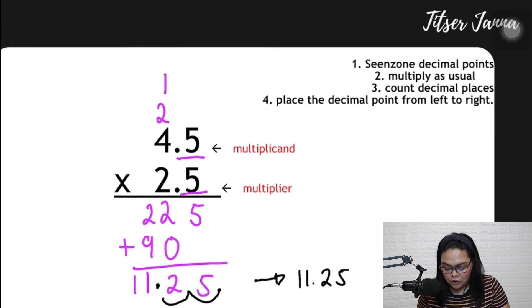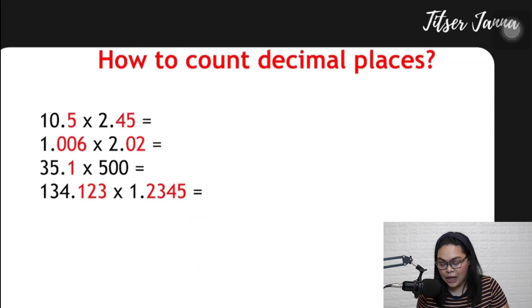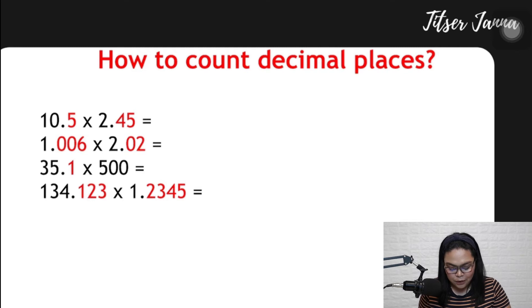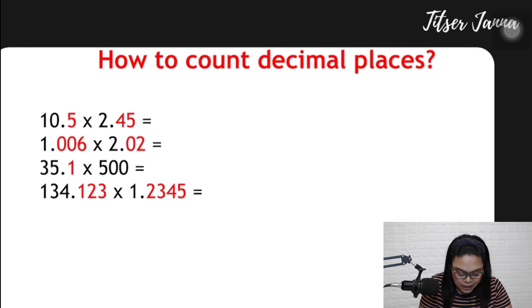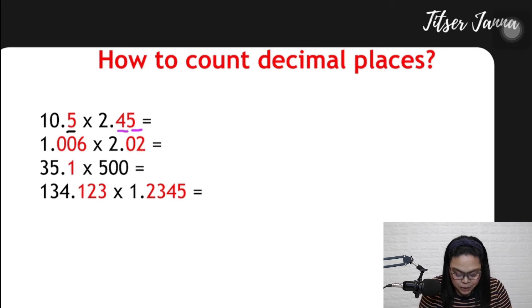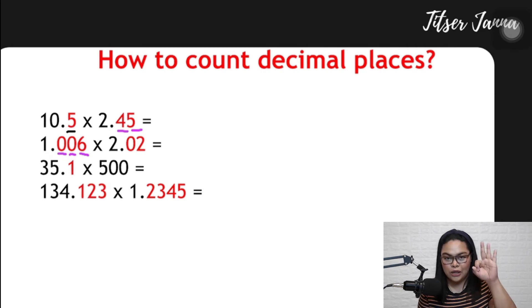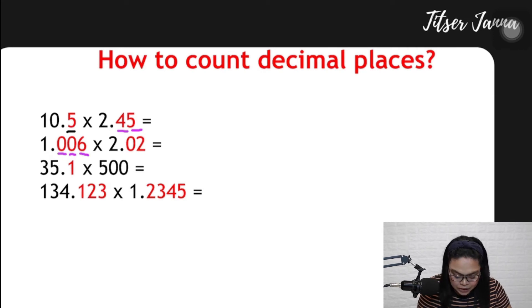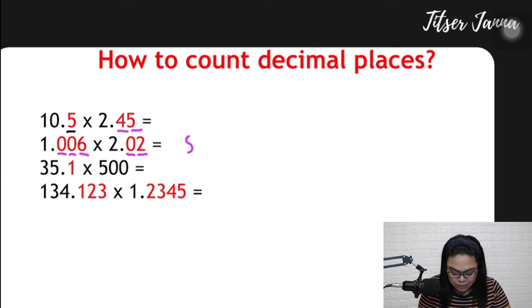Let's practice how to place or count decimal places. Like this, 10.5 times 2.45. Why is it three decimal places? One, two, three. The numbers after the decimal point. This one, 1.006 times 2.02. One, two, three - so three in the first digit. In the second it's 1 and 2. So we have five decimal places.